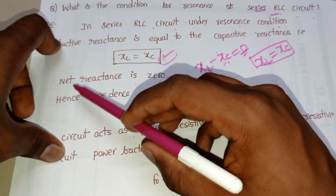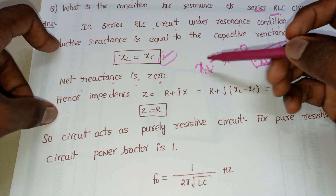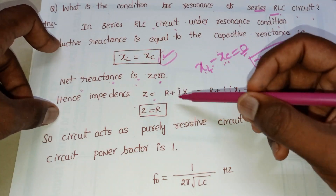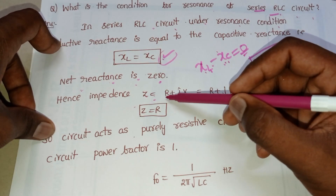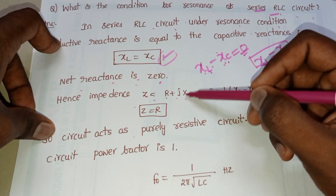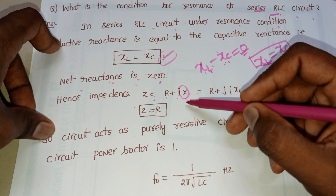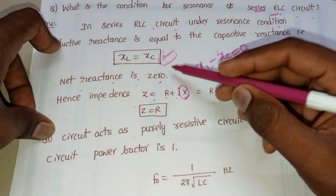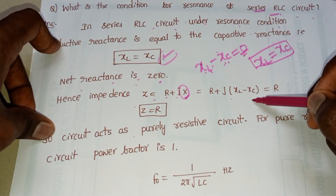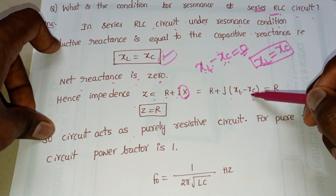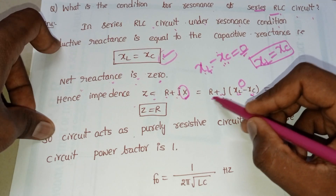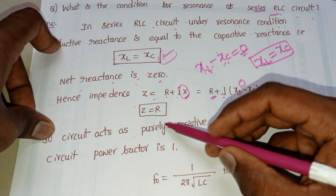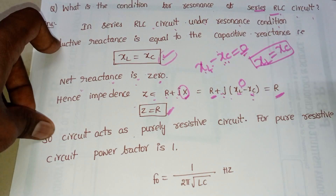Next, consider impedance. Impedance Z equals resistance R plus j times reactance X, where X is the total reactance XL minus XC. Since XL equals XC, we have XL minus XC equal to zero, so j times zero equals zero. Therefore Z equals R.